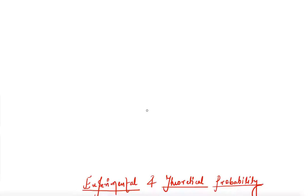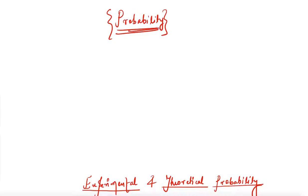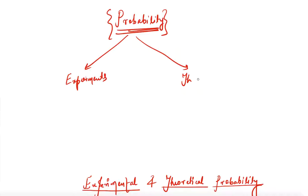Hello everyone, welcome to the second video of the chapter Probability. As you have seen in the previous video, I told you the basic introduction and meaning of probability. In this video we'll be seeing what is experimental probability and what is theoretical probability. Probability is of two types: one is based on experiments, and another is theoretical.